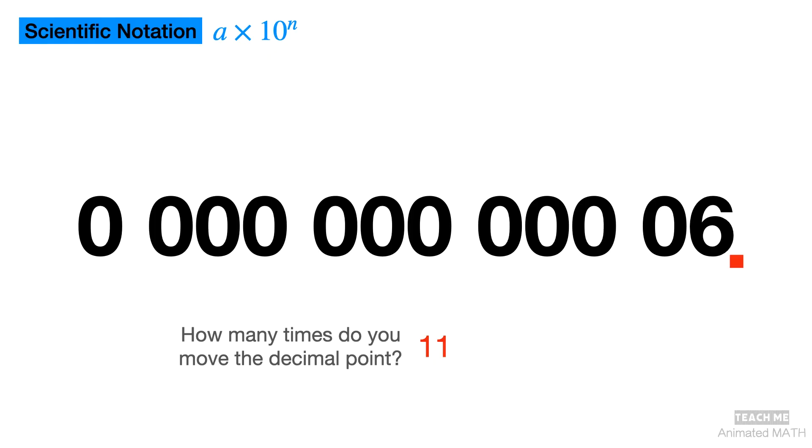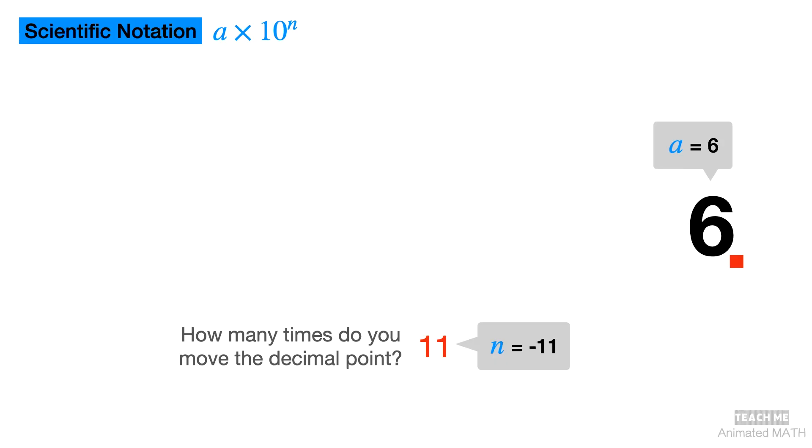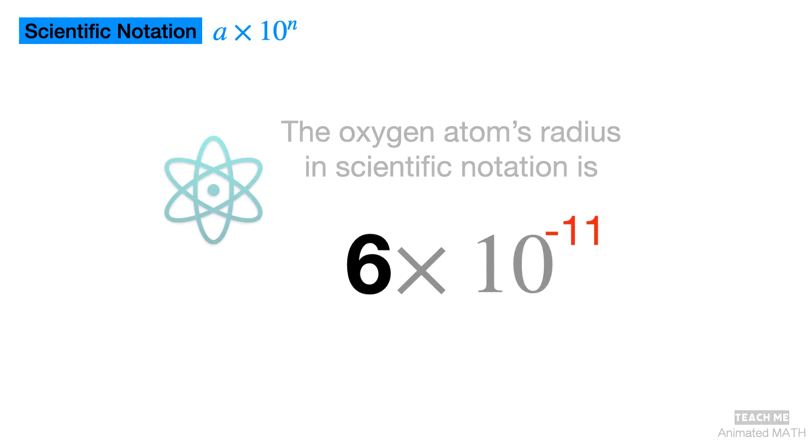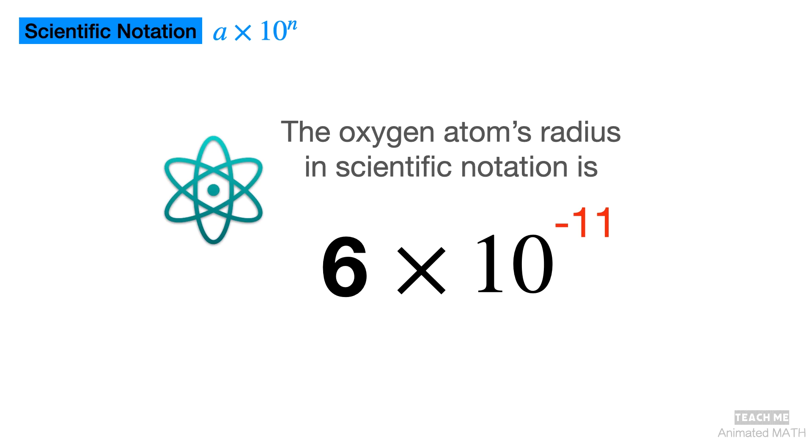Since we moved the decimal point to the right, the value of n is negative 11 and the value of a is 6. The scientific notation for the radius of an oxygen atom is 6 times 10 to the negative 11th power.